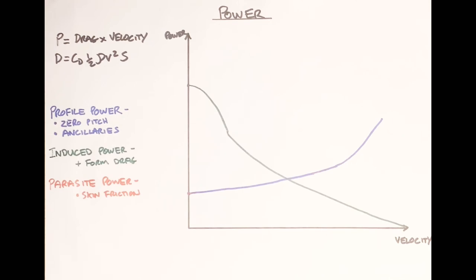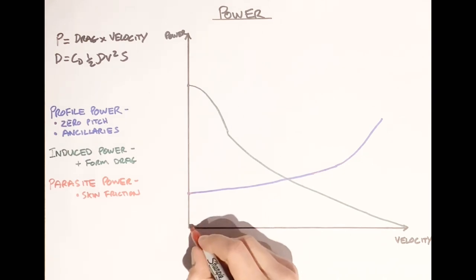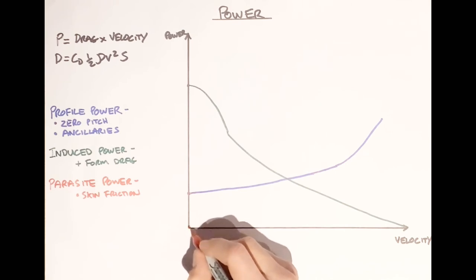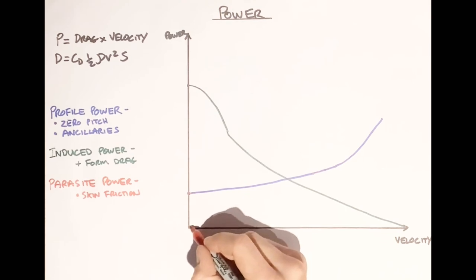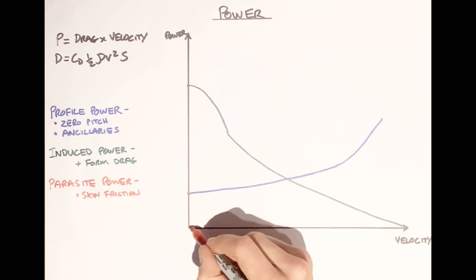This increase in rotor drag from the change in disc profile gives us the parasite power requirement. At zero forward speed there's no skin friction or parasite power, but as we go faster we get an exponential increase — the faster we go the more drag we encounter and the more we must tilt the rotor disc forward — giving us a graph that increases exponentially.